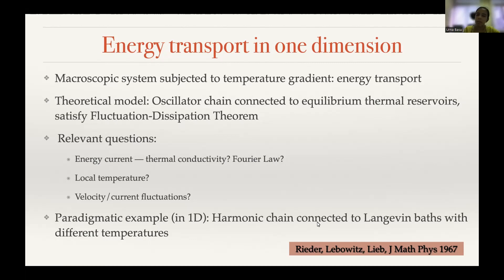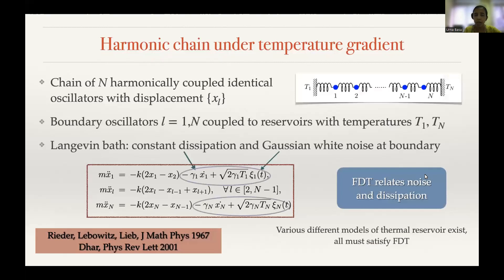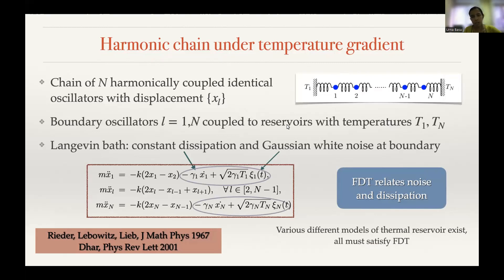This was studied by Rieder, Lebowitz, and Lieb, and they actually solved this system exactly. In detail, we have a chain of N harmonically coupled oscillators — the blue dots in the schematic diagram — where the first oscillator is connected to a thermal bath of temperature T1 and the last one to a thermal bath of temperature TN. When T1 is not equal to TN, we expect currents flowing through the system.